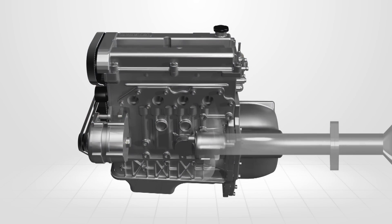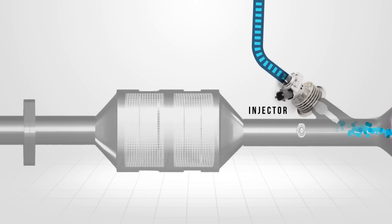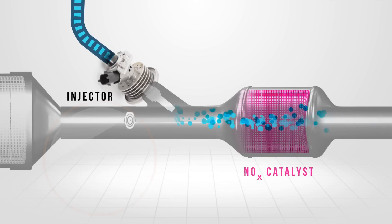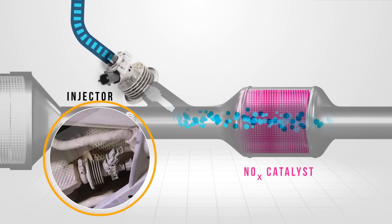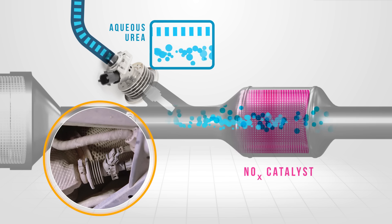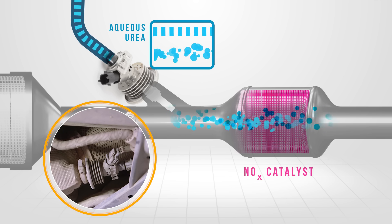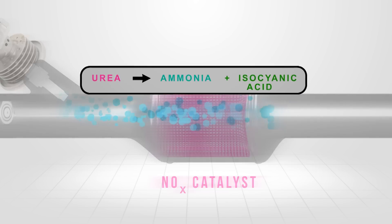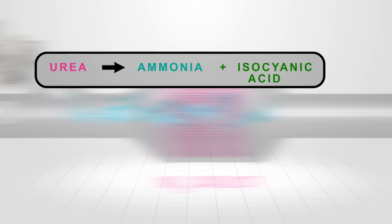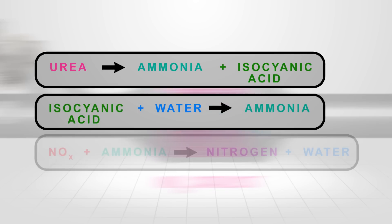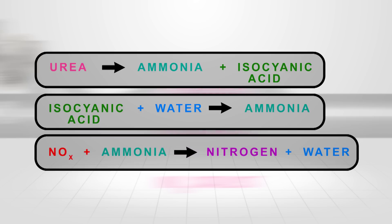To achieve this, a reducing agent is injected into the exhaust gas flow upstream of the NOx catalyst. The agent more commonly used is known as aqueous urea. During the chemical reaction, the urea breaks down the NOx compound and then combines with these new elements to form nitrogen and water.